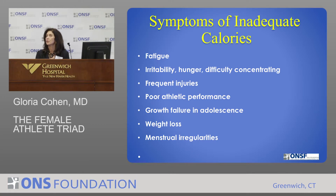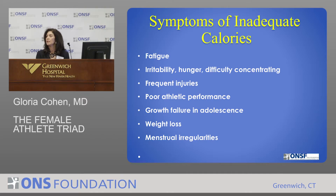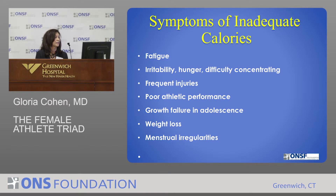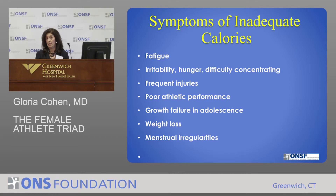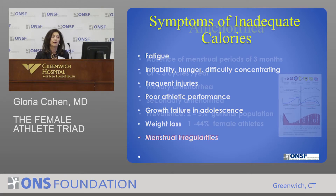Frequent injuries often bring them in to see us — another stress fracture or another sprain or strain. They may find that their athletic performance is down; they're putting in the same effort but not getting the same result, and that's when they listen to you about low energy availability. In adolescence there may be some growth failure — we've seen that in Olympic athletes like gymnasts. There can also be weight loss and menstrual irregularities.